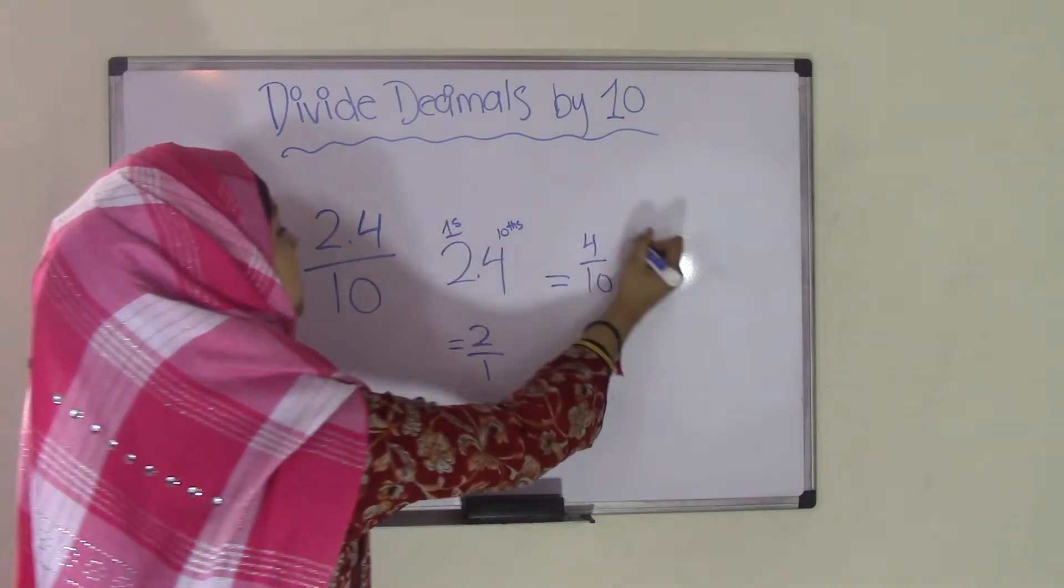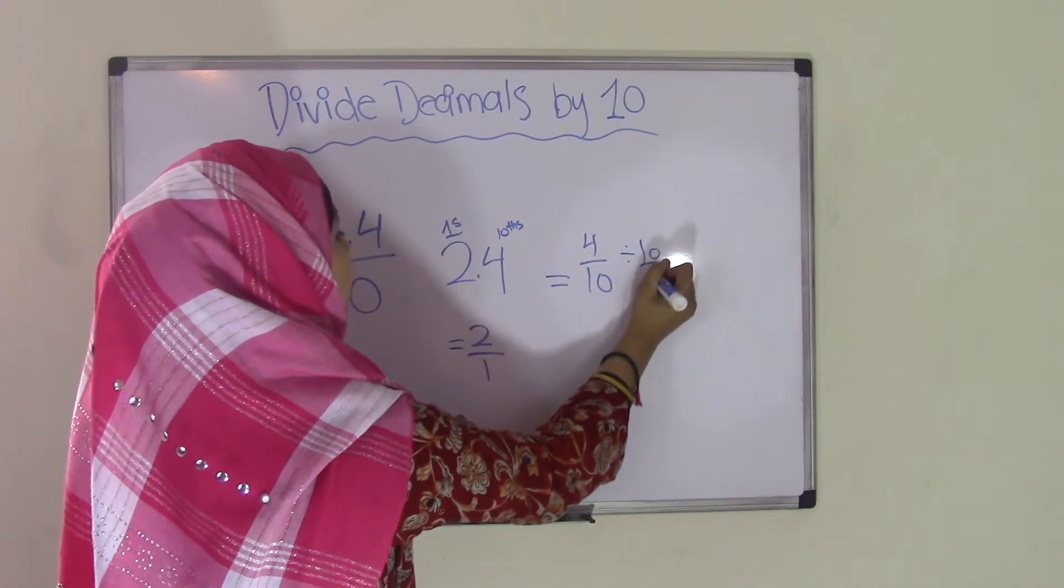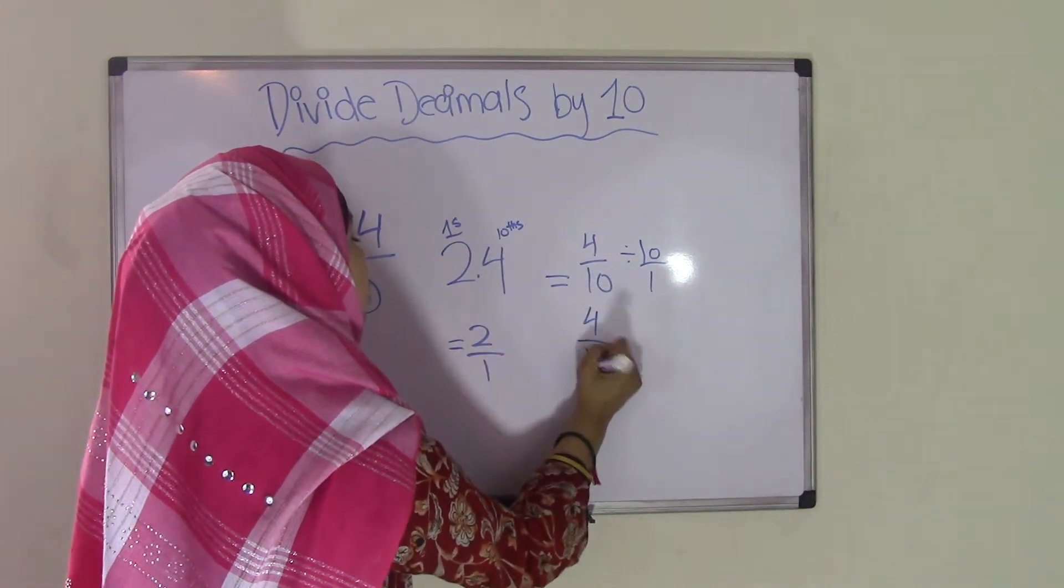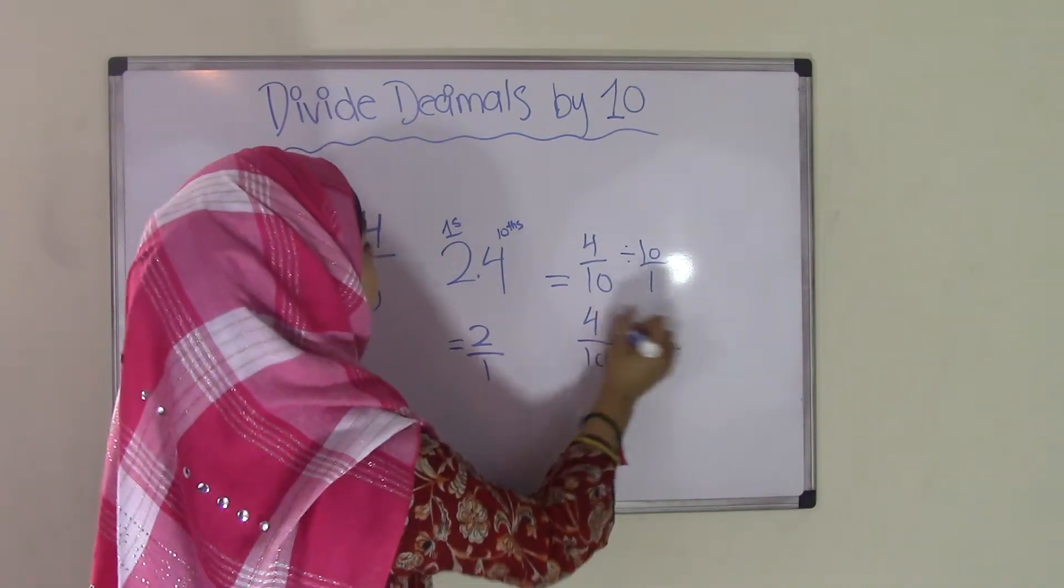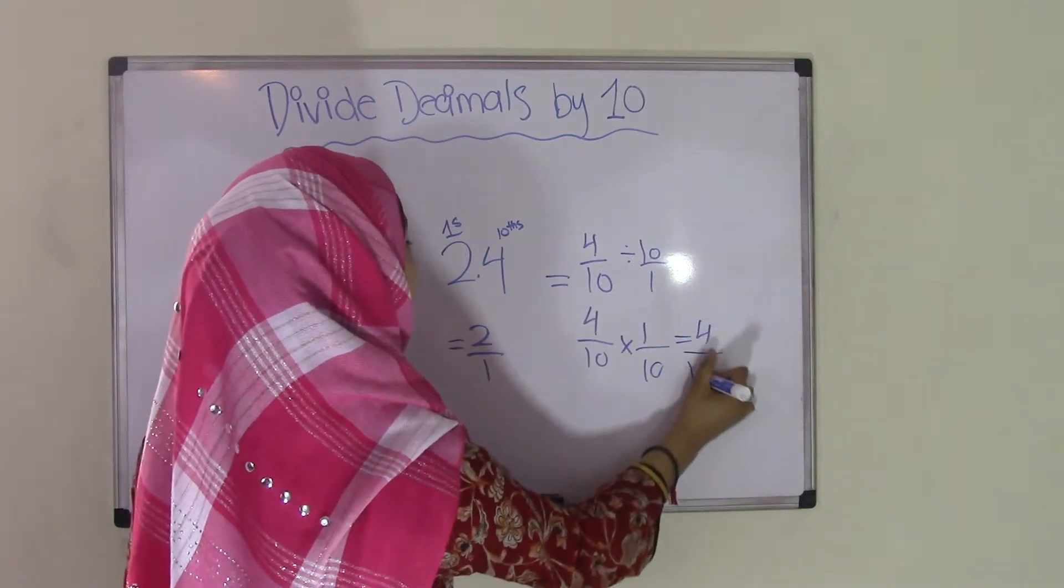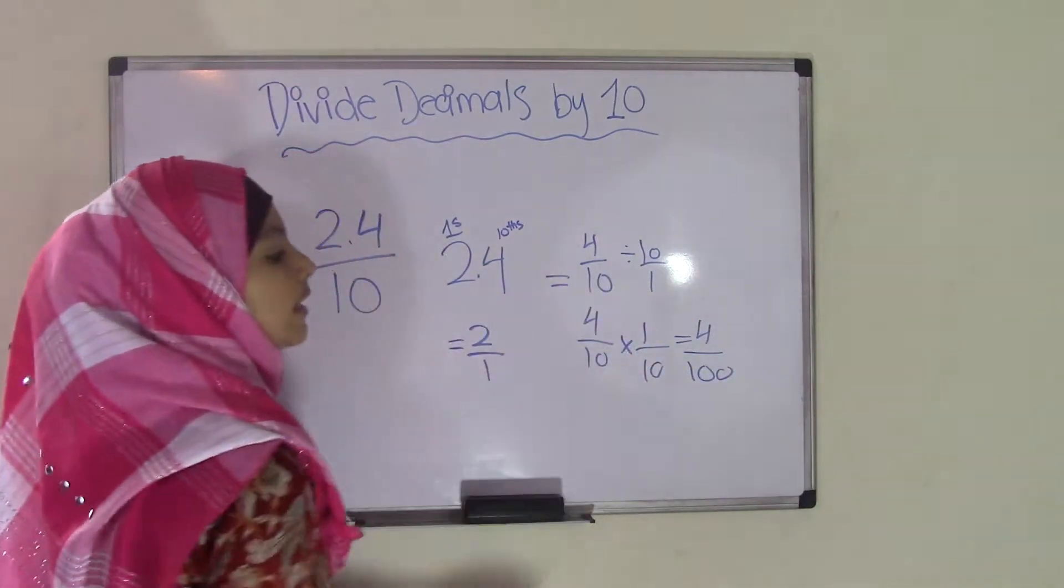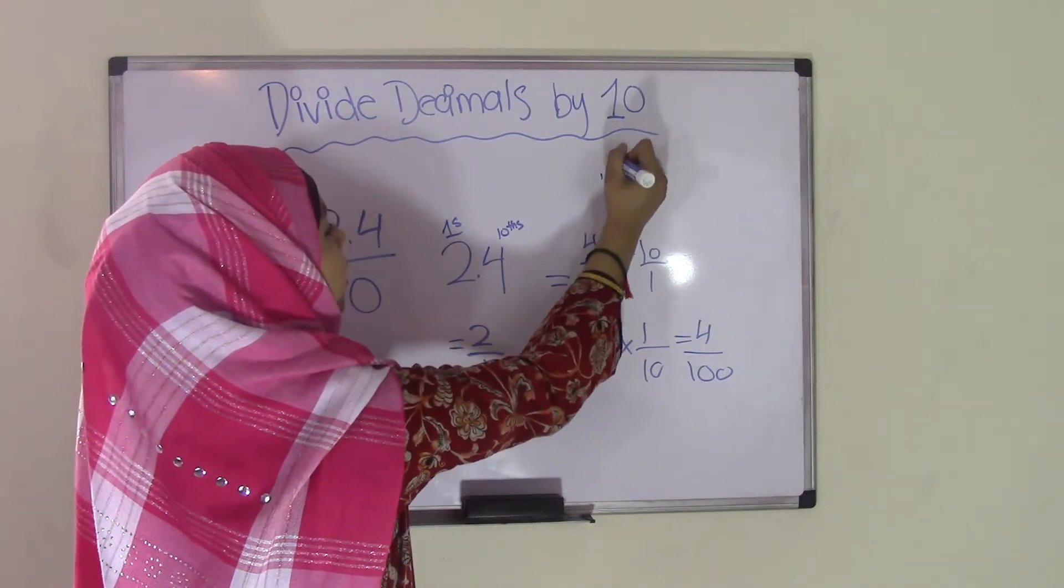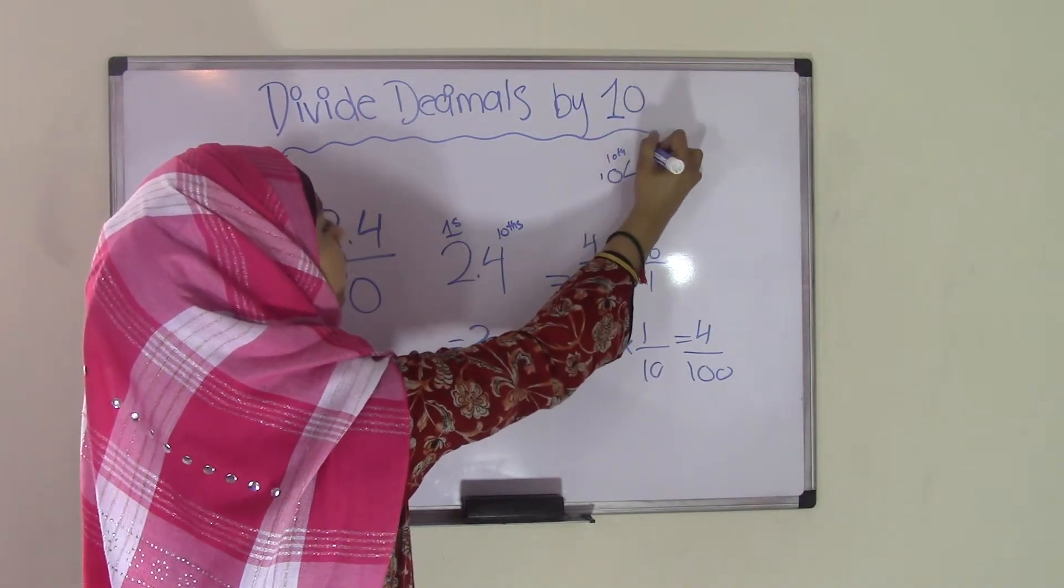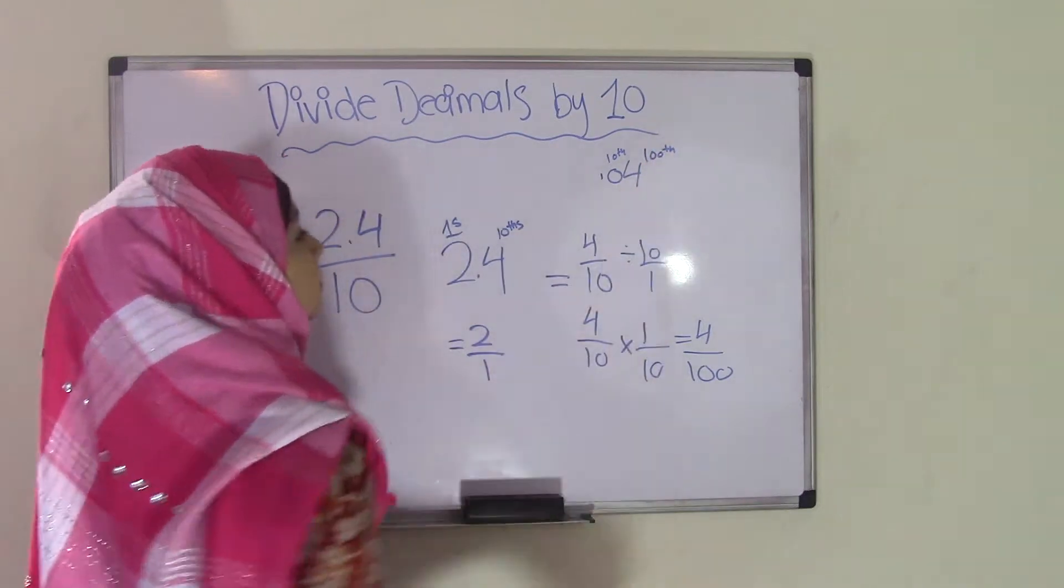If we divide 4 tenths by 10 over 1, it could also become 4 tenths times 1 over 10, because it would become a reciprocal. 4 times 1 is 4. 10 times 10 is 100. So now the 4 over 10 has now become 4 over 100, or 0.04, because 0 is in the tenths place now, and the 4 is in the hundredths place.